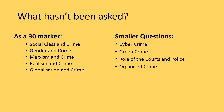Looking at what hasn't been asked yet — most notably as a 30-marker, social class and crime and gender and crime haven't come up. You need to know four or five reasons for differences in social class and crime, including white-collar and corporate crime. For gender and crime, you also need to cover victimisation — the idea that males are statistically more likely to be victims of crime, but females are more likely to be perceived as victims.